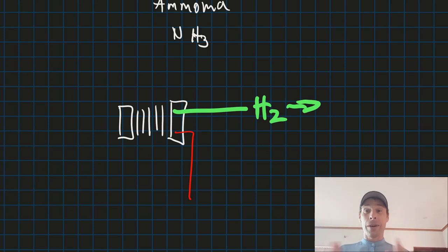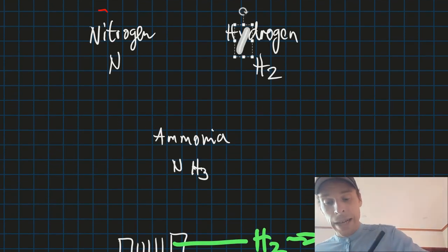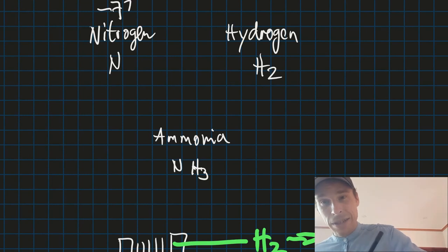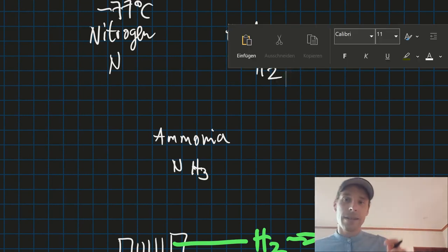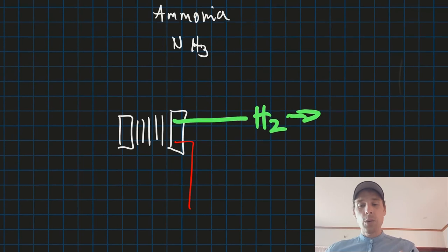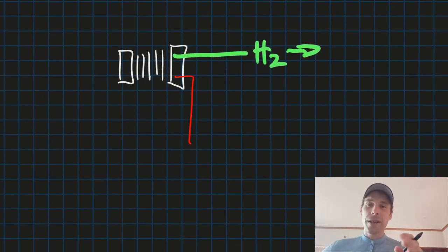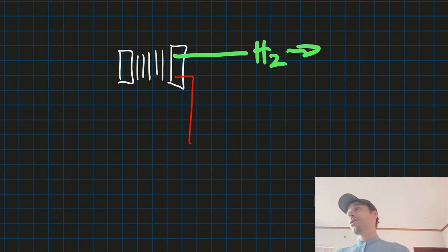And the good thing about nitrogen is it condenses at a temperature of minus 77 degrees centigrade, which is a temperature we can easily reach. How can we reach low temperatures? With refrigerators, of course.